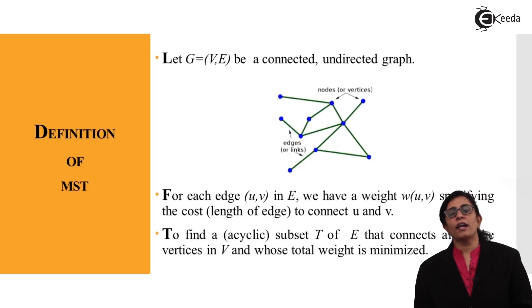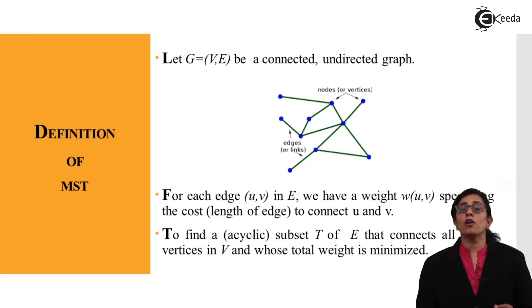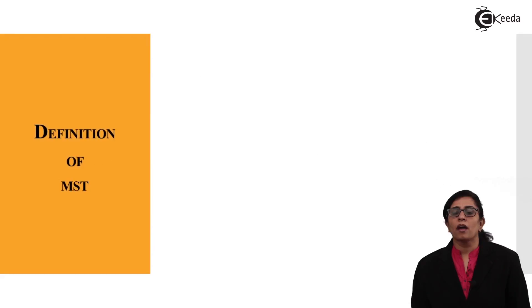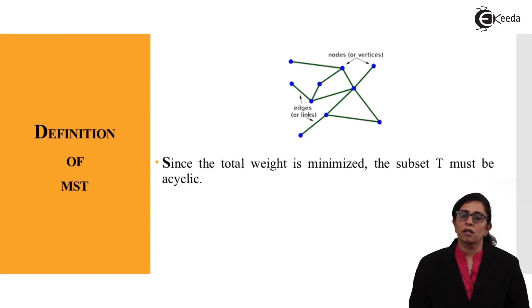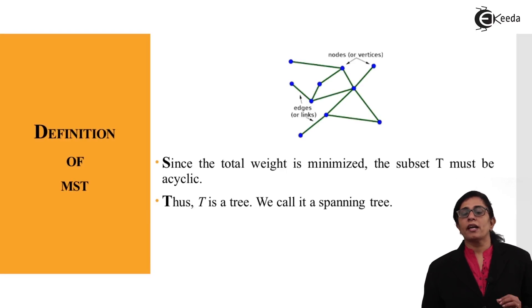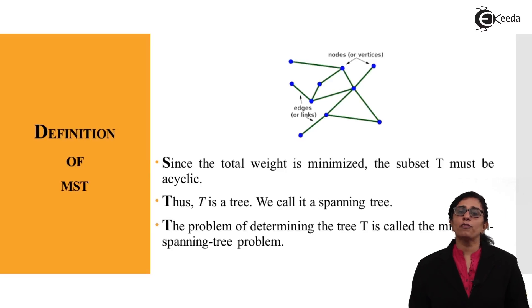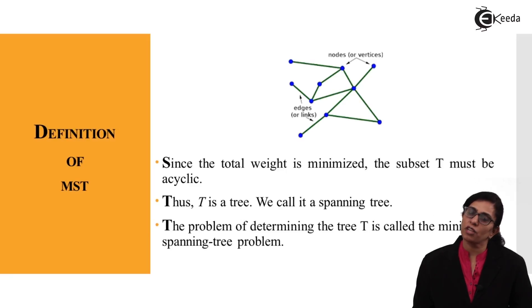We work on these weights to find the shortest path first, ensuring there is no cycle formed. E connects all the vertices in V and whose total weight is minimized — this is how the minimum spanning tree works. The subset T must be acyclic, meaning it should not form a cycle. T is the spanning tree formed from source to destination, and the problem of determining T is called the minimum spanning tree problem.